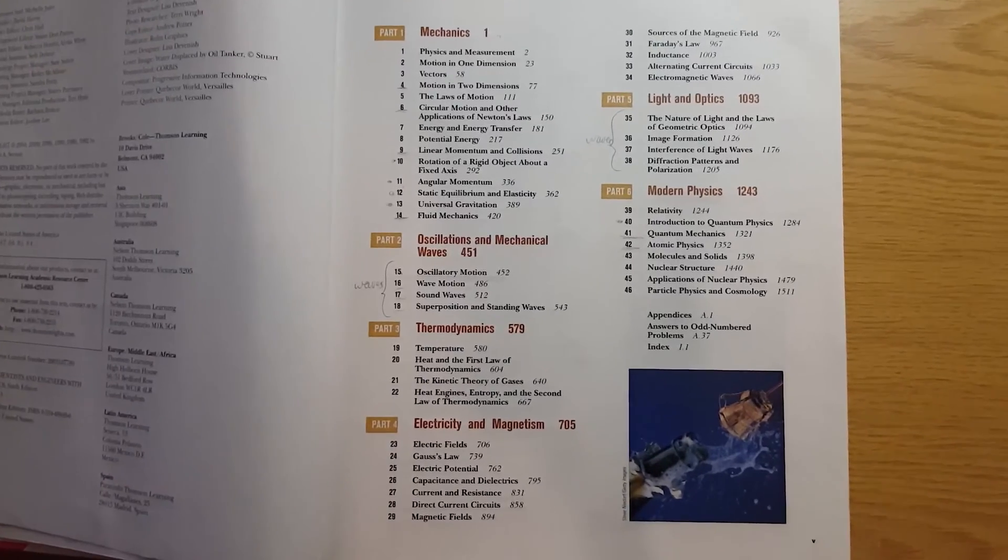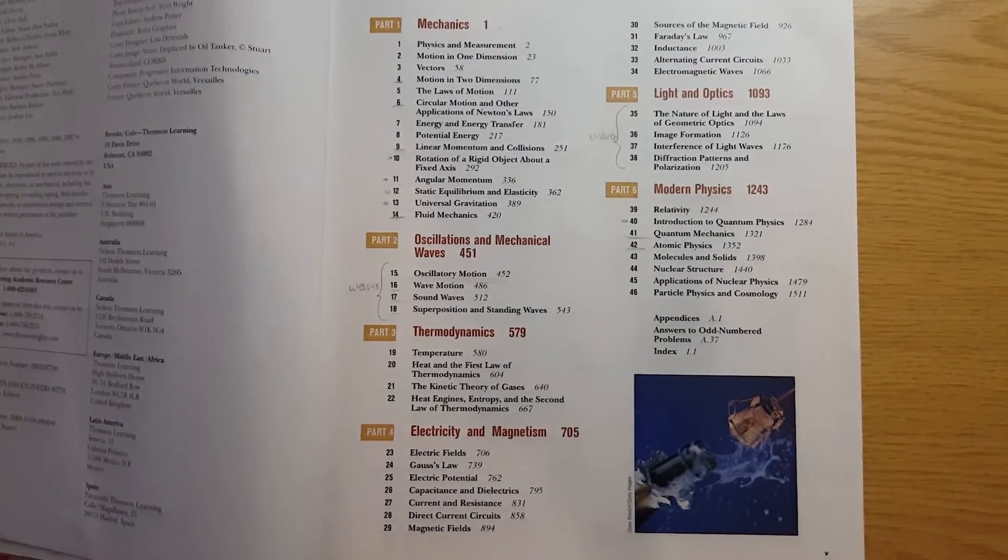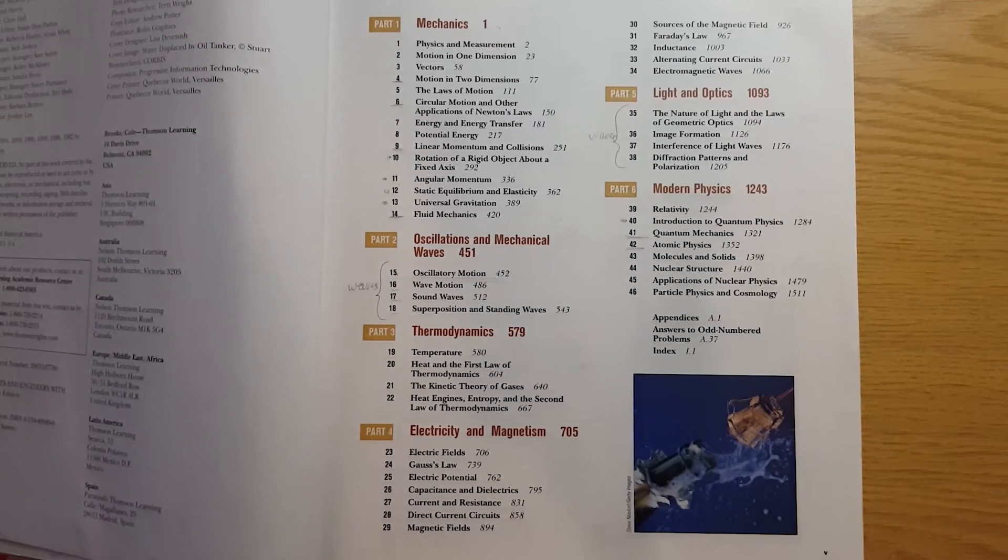So in the first semester, you'll most likely cover classical mechanics, which includes oscillations and waves and thermodynamics. And the second semester will probably include electricity and magnetism, light and optics, as well as an introduction to modern physics, which includes relativity and quantum mechanics.